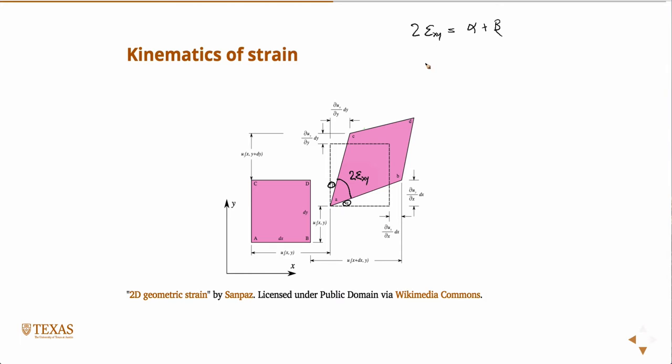So then the tangent of alpha, and the tangent is opposite over adjacent. So opposite over adjacent, that is partial ui partial x dx over dx.